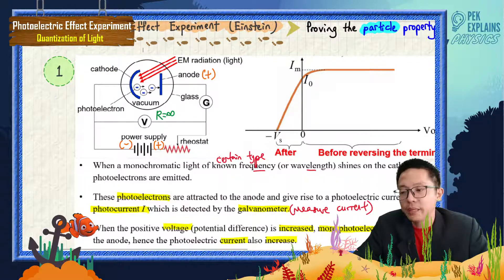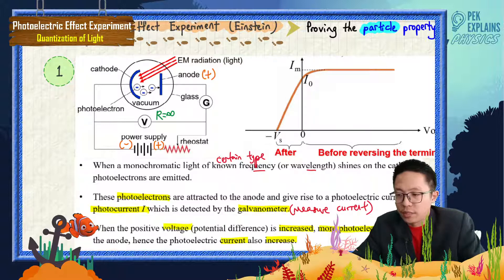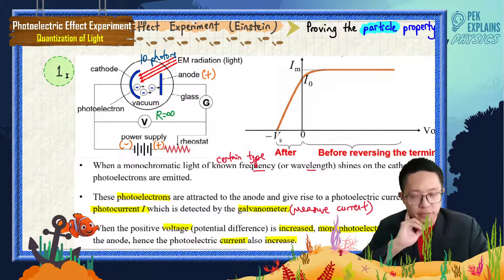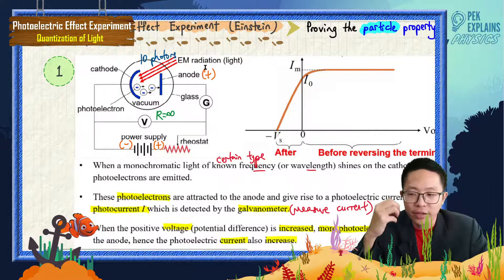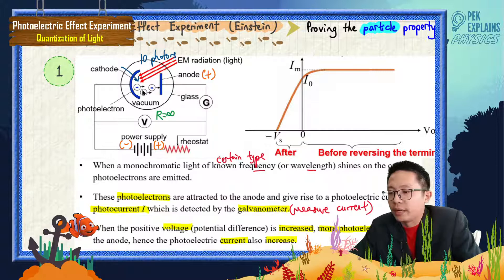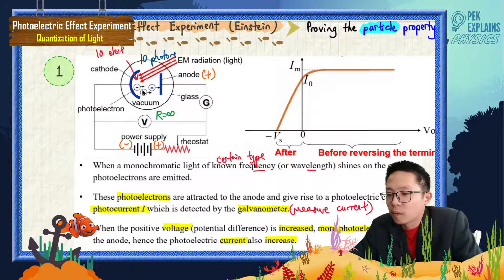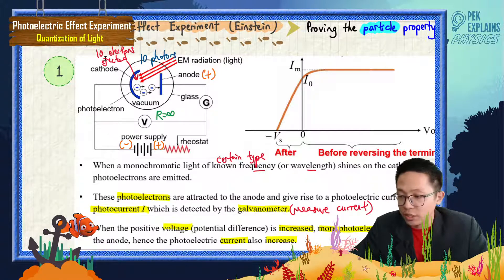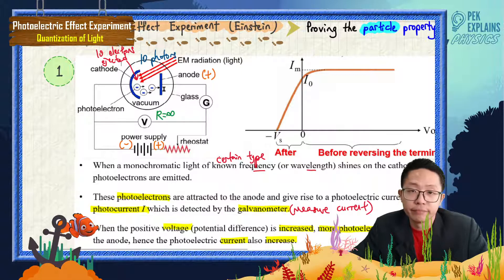For example, if the incident light has 10 photons, and each photon has enough energy to eject an electron, then 10 electrons will be ejected. However, not all the electrons can reach the anode. Maybe only six electrons out of the 10 ejected can reach the anode under a given voltage.